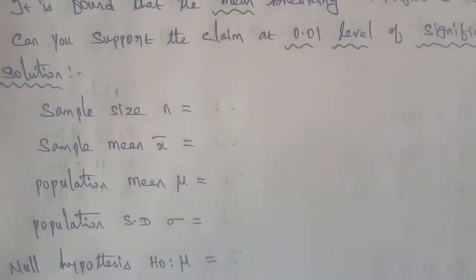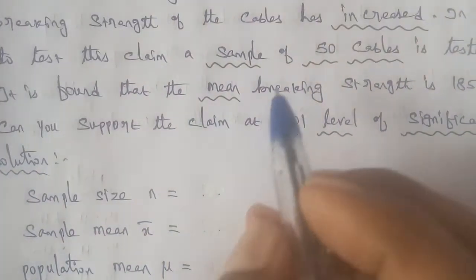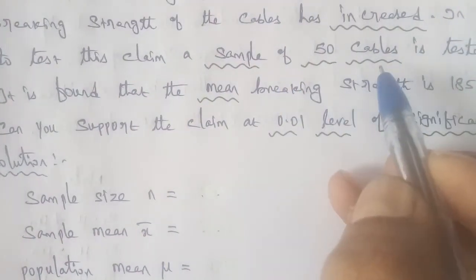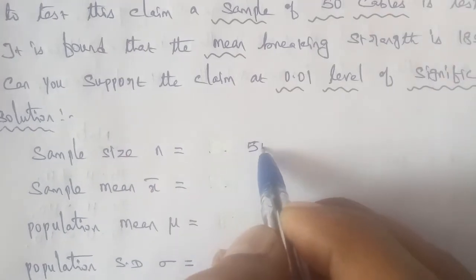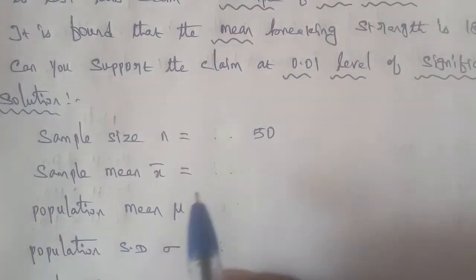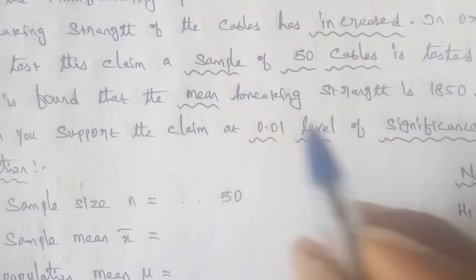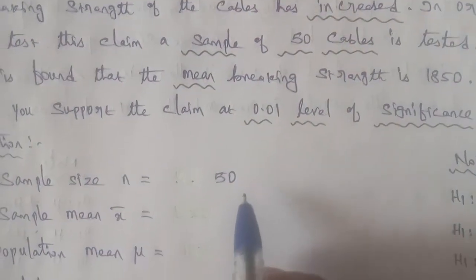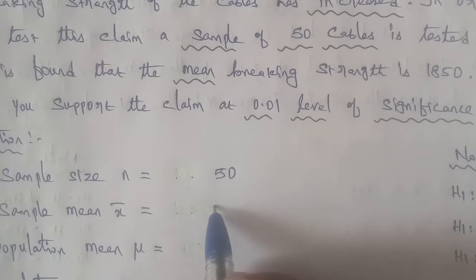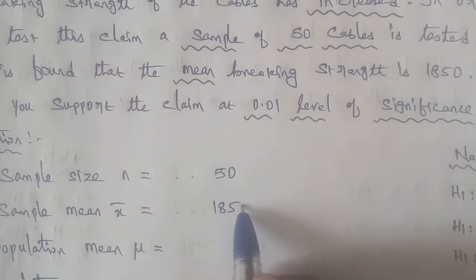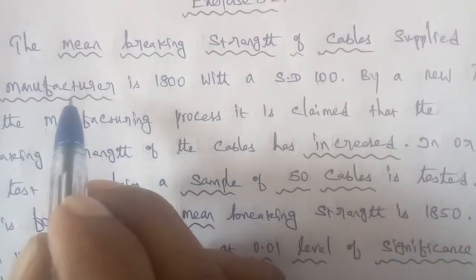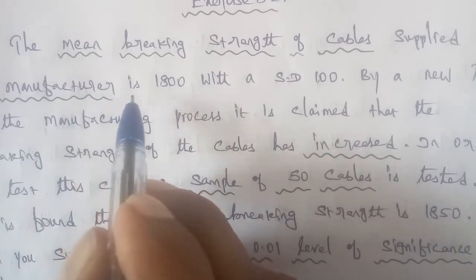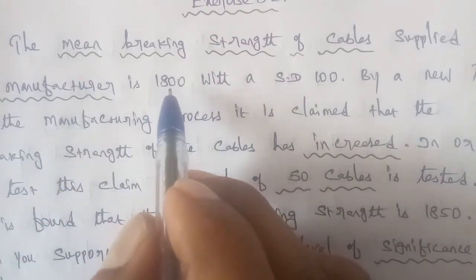We will enter the sample size: n is equal to 50 cables. Sample mean x-bar: the breaking center mean is 1850, so x-bar equals 1850. Population mean, symbol is mu, answer is 1800.